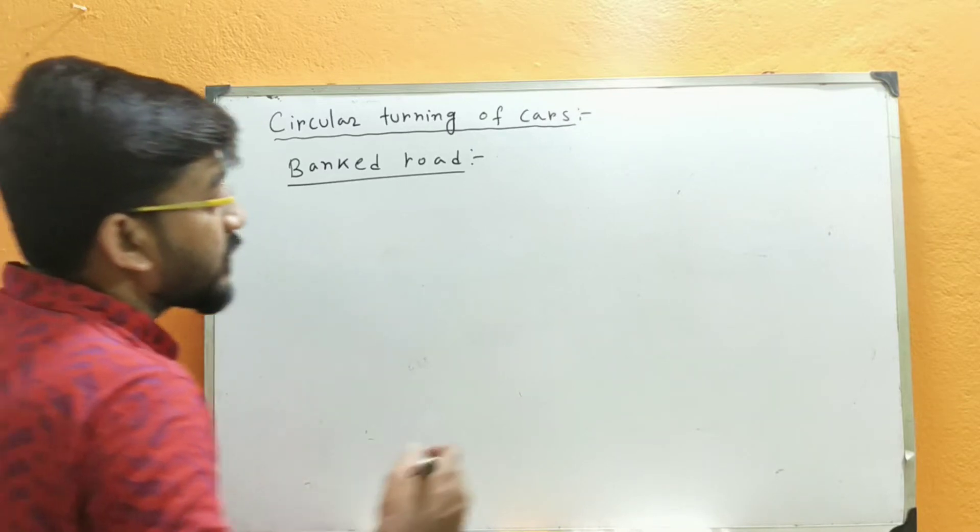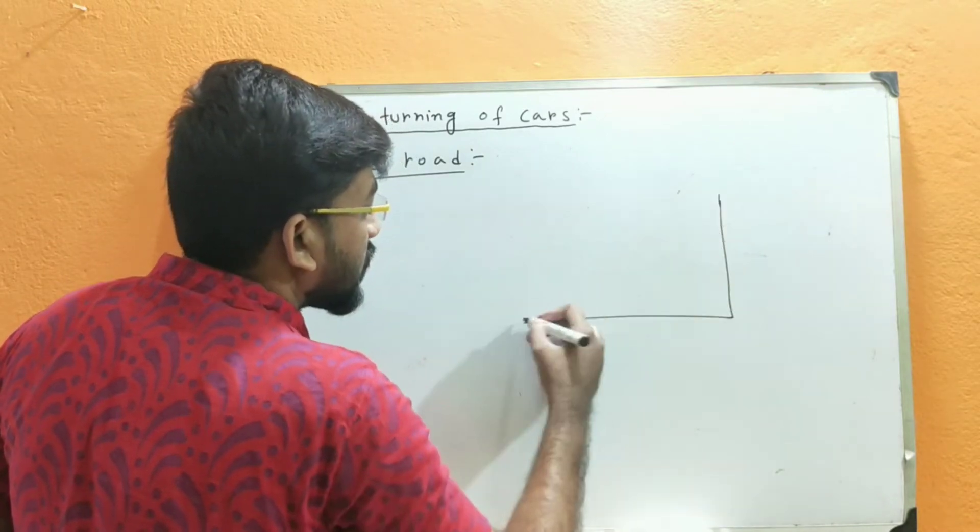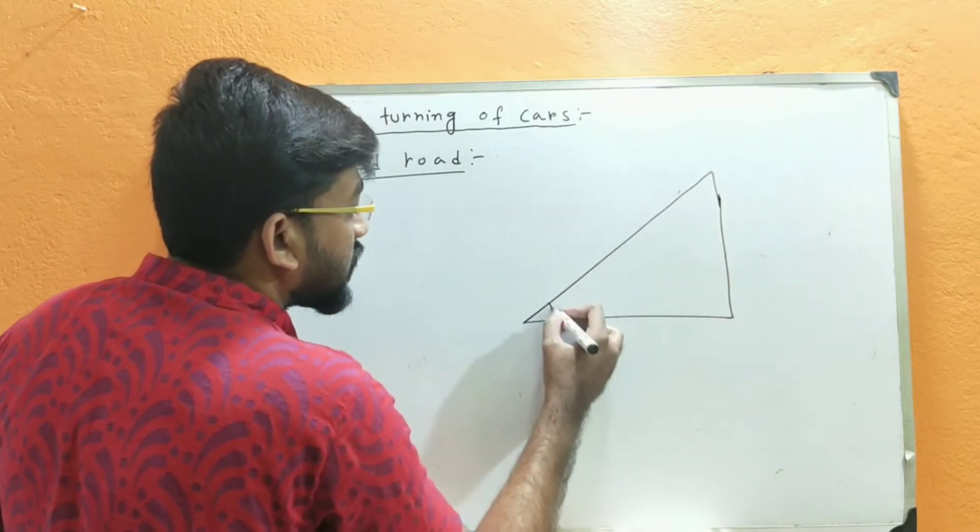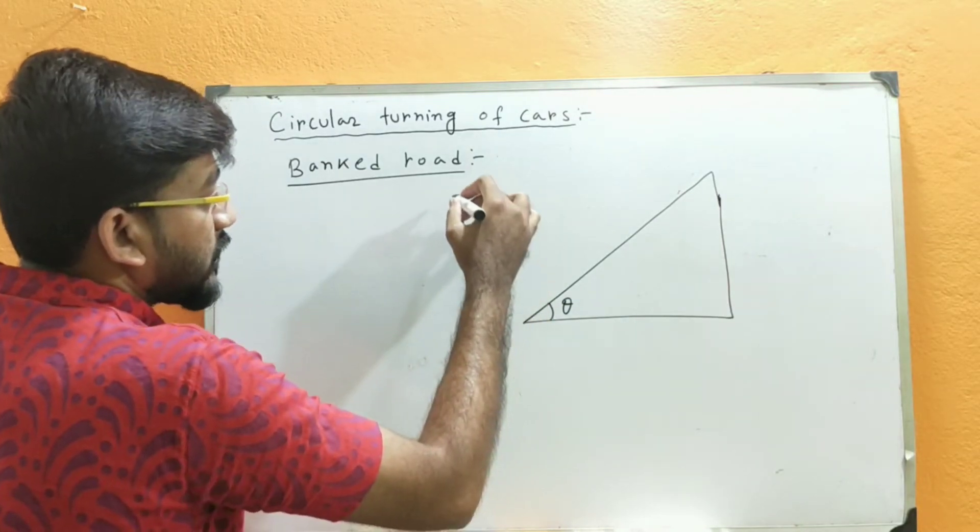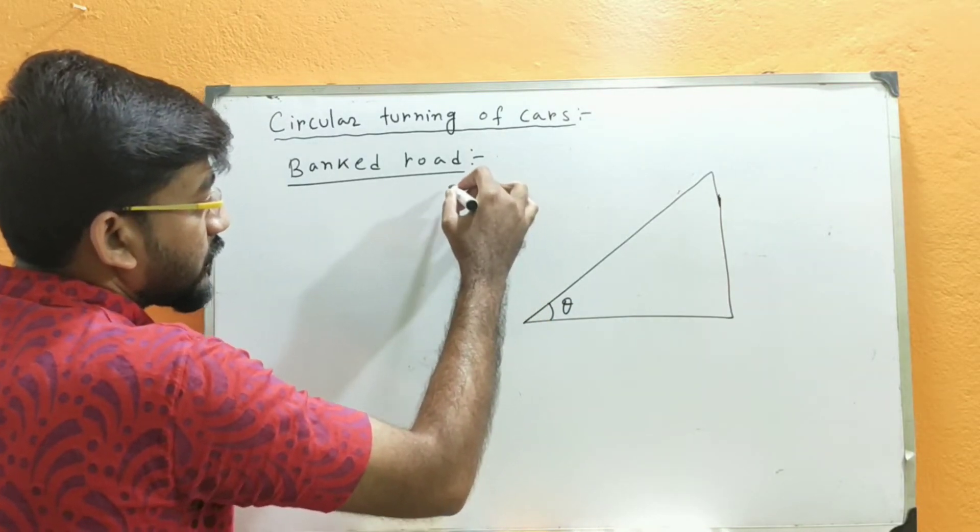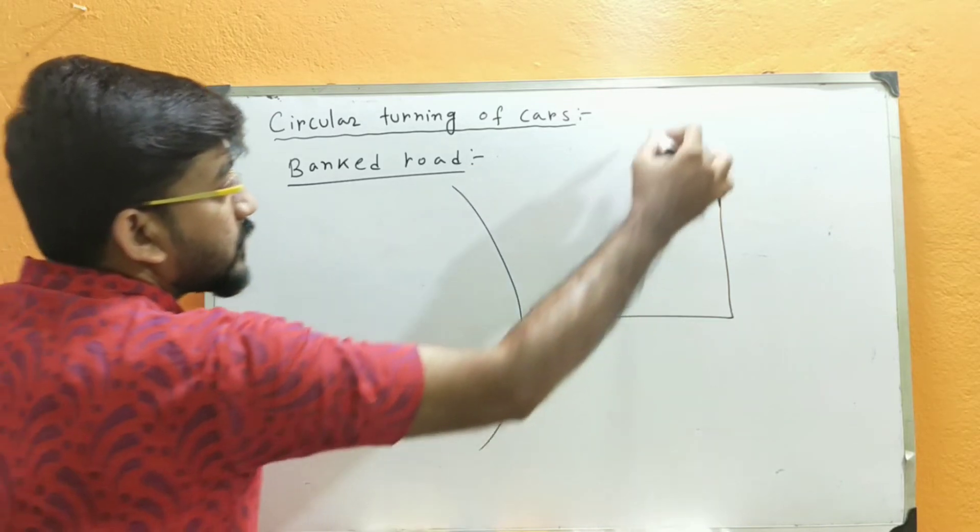Let me draw a banked road like this. Suppose this is a banked road, and this is the banking angle theta. The circular turning is like this. Along this direction, this is the track, the circular track.